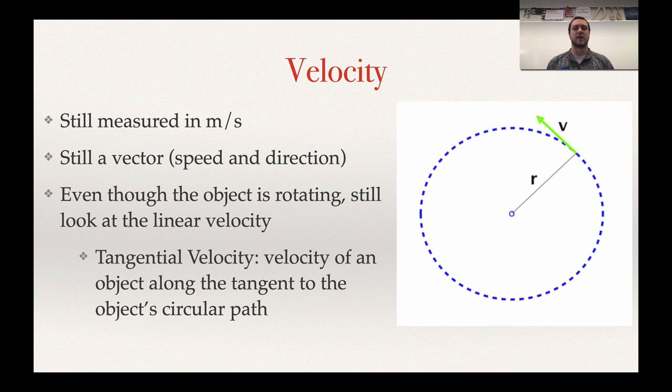So here is an example, a diagram that's going to show you what direction the velocity is going with respect to the circle. Our velocity, we're measuring this in meters per second, so that's going to stay the same, and we're still looking at this as a vector quantity. But it is moving in a straight line, it is moving linear, it is moving tangent to the circle.